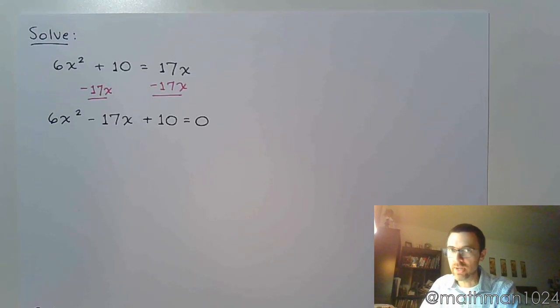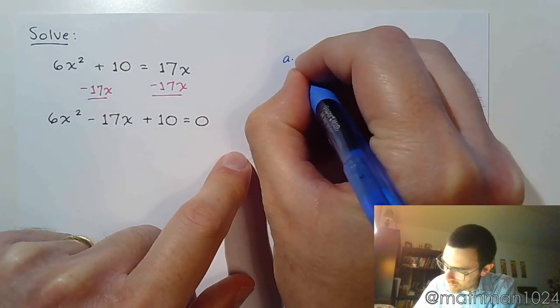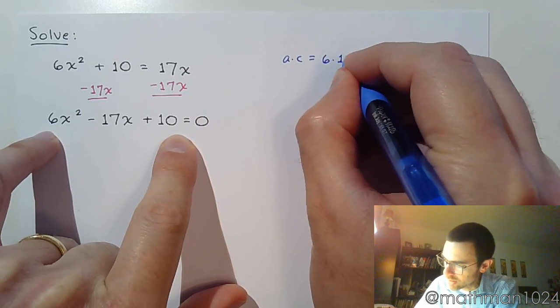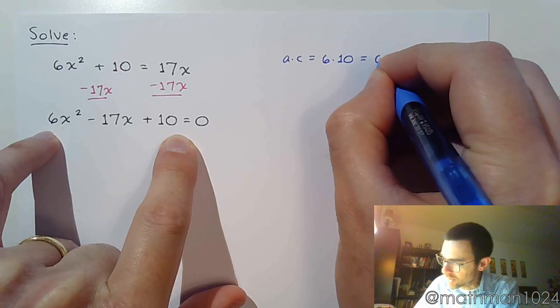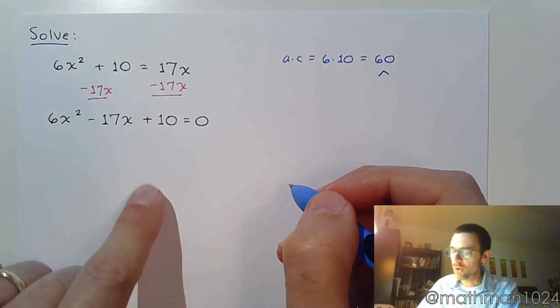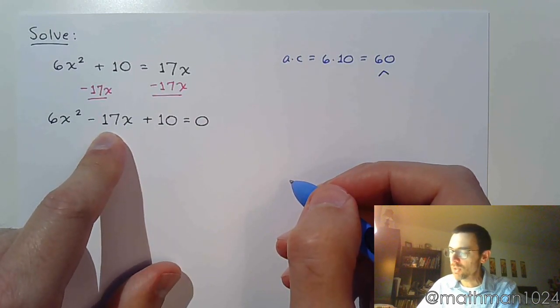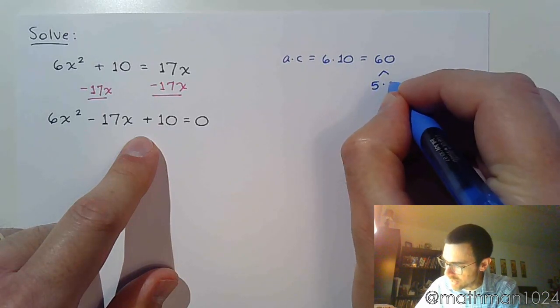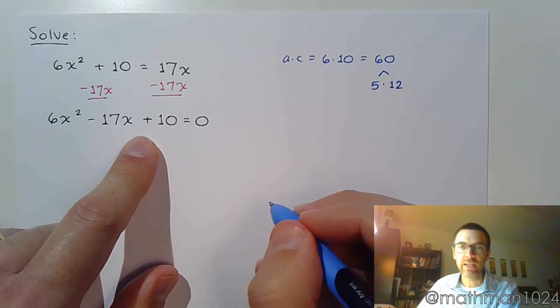Now that we have that, we've got to factor. Unfortunately the lead coefficient is not one, so it's going to be a little bit more difficult. We're going to do the AC method off to the side. The AC method says we're going to take the 6 and the 10, so 6 times 10, the product is 60. Now we're trying to find those factors of 60 that add to give us 17. The factors of 60 are going to be 5 and 12, these are the numbers that add to 17.